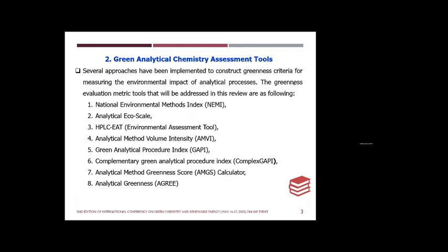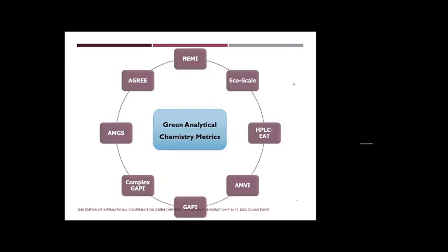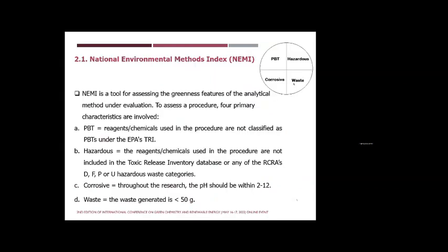It is very important to develop assessment approaches to evaluate analytical methods as green or not. Several approaches have been implemented to evaluate the greenest methods including: National Environmental Methods Index, Analytical Eco Scale, HPLC Environmental Assessment Tool, Analytical Method Volume Intensity, Green Analytical Procedure Index, Complementary GAPI, Analytical Method Greenness Score, and Analytical Greenness. I will talk briefly about each metrics approach.